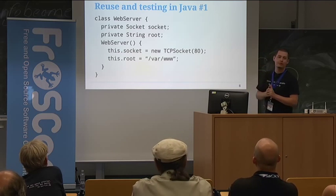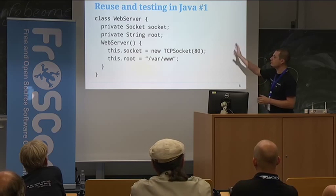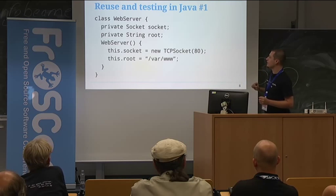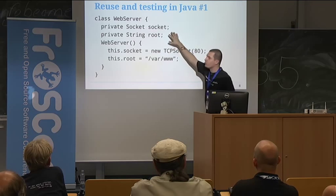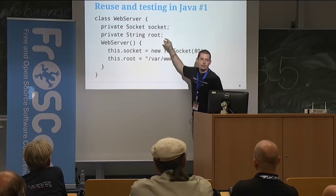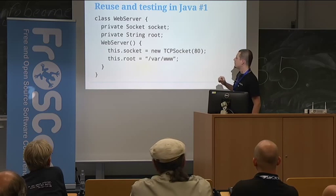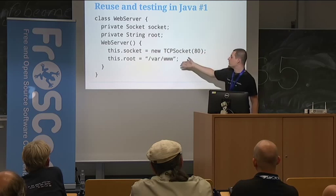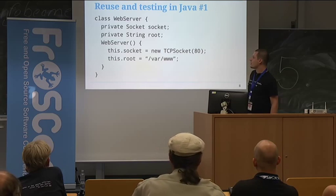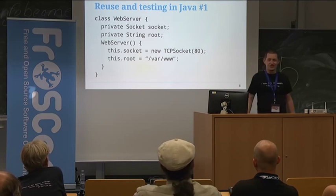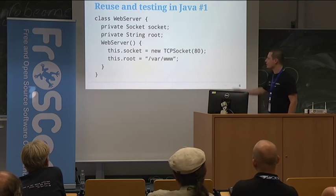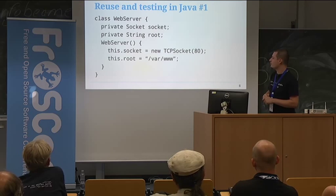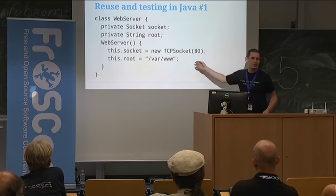Say I would write a simple Java web server. This class only contains a couple of members and a constructor function, but you could write it with a socket member that receives all incoming connections and a root directory from which files should be fetched. Inside the constructor you create a TCP socket and bind it on port 80, and the root directory is /var/whatever. Most people would agree that this class is not really testable or reusable — it can only listen on port 80, you can't run two web servers at the same time, and it's restricted to serving files from a single directory.